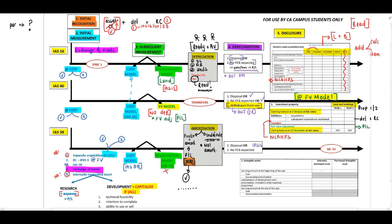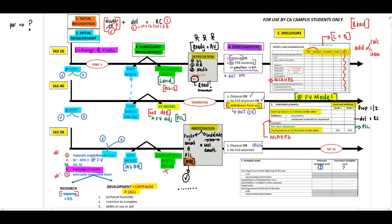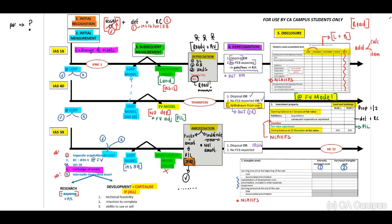For the disclosure of intangible assets, it is extremely important to include two columns: one for internally generated assets and one for other assets. Similar to the PPE note, include sufficient space for additional lines such as a transfer to non-current assets held for sale, and remember to include basic calculations.